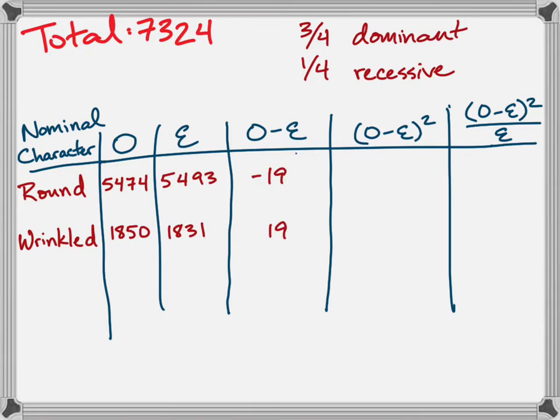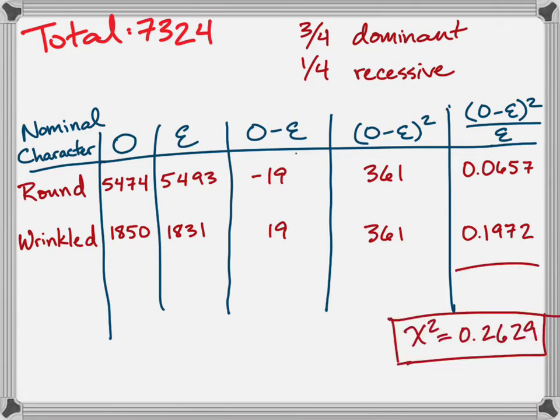Now I subtract O minus E, so you can see that already popped up, and I multiply that value by itself. Then I divide by E to come up with my two values here at the end, and two categories means that I take these two values and I add them at the end to arrive at my chi-square value.